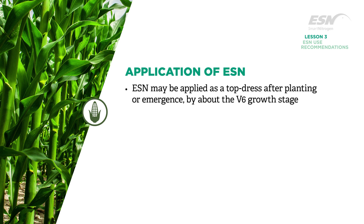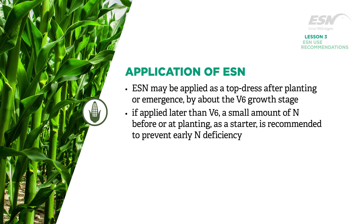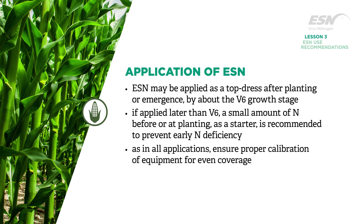ESN may be applied as a top dress after planting or emergence. We recommend this application be made by about the V6 growth stage. If ESN is to be applied later than V6, a small amount of nitrogen before or at planting — such as a starter — or sufficient residual available soil nitrogen is recommended to prevent early nitrogen deficiency.